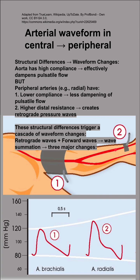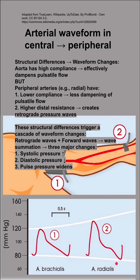These structural changes trigger a cascade of waveform changes. Retrograde and forward waves sum together, so because you have higher resistance in the periphery, in the distal arteries, the retrograde waves are going to add to those forward waves and cause wave summation, which leads to three major changes: your systolic pressure will be higher as you go more distal; your diastolic pressure will be lower; and your pulse pressure will therefore widen. Your pulse pressure — systolic minus diastolic — will be bigger in the periphery compared to your central arteries.